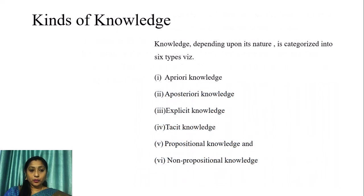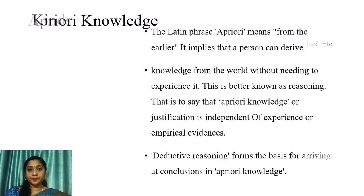When we look into the kinds of knowledge, depending upon its nature, knowledge is categorized into six types: a priori knowledge, a posteriori knowledge, explicit knowledge, tacit knowledge, propositional knowledge, and non-propositional knowledge. Let us look in detail at what each of these means.